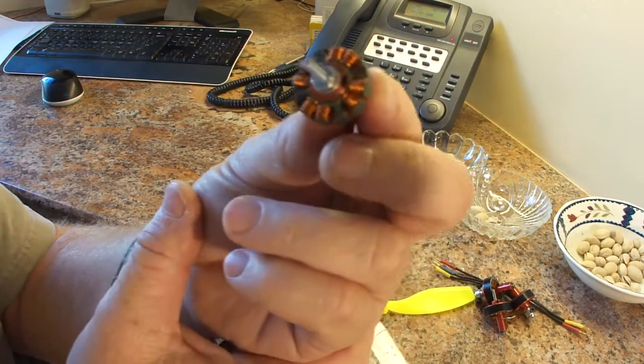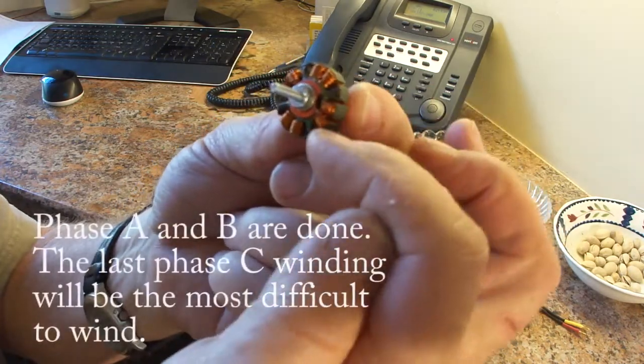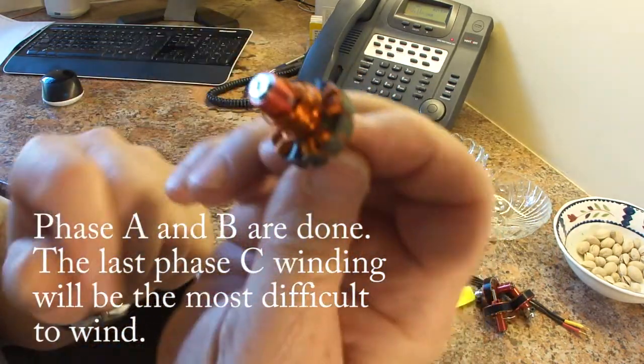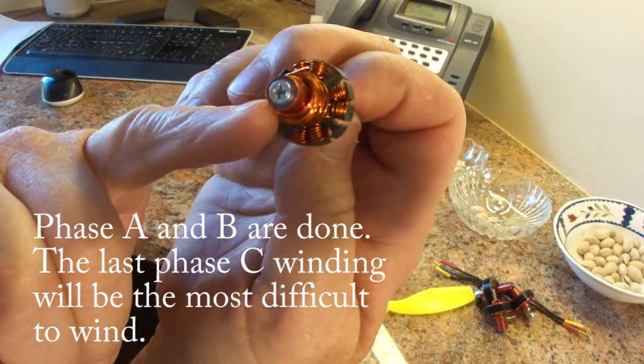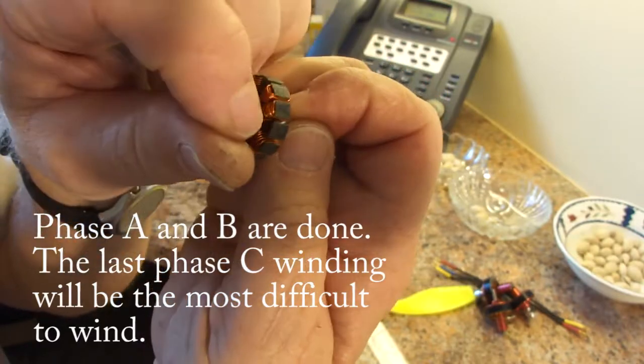Okay, I've got phase B all done, as you can see. And so I only have four poles left. And I've got quite a jumble of wires on the back of the motor. But that'll all get straightened out here shortly.